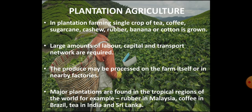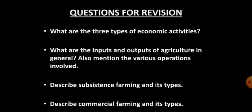That is all for this part of the chapter. The remaining part will be covered in the next video. Till then, solve these questions: first, what are the three types of economic activities? Second, what are the inputs and outputs of agriculture in general, and mention the various operations involved. Third, describe subsistence farming and its types. Fourth, describe commercial farming and its types. If you found this video helpful and wish to watch more such content, do consider subscribing to the channel. If you have any queries or comments, please post them in the comment section below. Thank you.